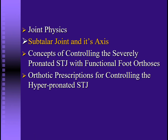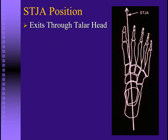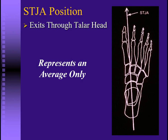Because the joint axis we're really concerned about here is the subtalar joint, let's look at that. Most of us have studied the subtalar joint axis position. Mantor in the 50s and Root in the 60s described it as being 16 degrees from the sagittal plane and 42 degrees from the transverse plane. By definition, those numbers are an average, and because they're an average, in most feet that axis is going to be somewhere else.